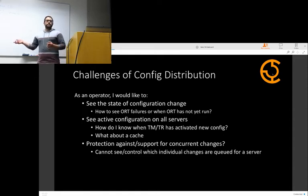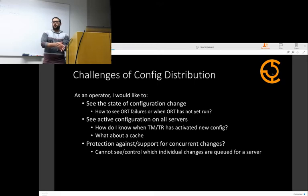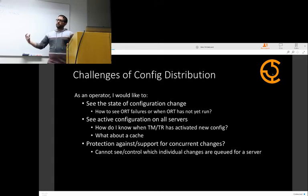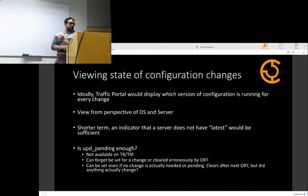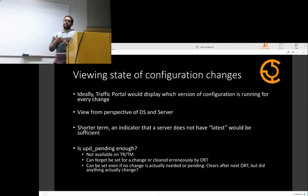Queue updates is a little weird right now — it'll queue all updates for all changes on the server. Right now you basically have to say to all other operators, 'don't touch anything, I'm going to make a delivery service change, wait for it to go all the way through the system before somebody else makes another change.' ORT just compares against the file on disk, not what's actually running in Traffic Server. We had an issue where we had the wrong private key for the public key, and somehow what Traffic Server was giving out was not what we expected — traffic_line -x didn't pick up the change. It's probably a Traffic Server bug, but it's still good to protect ourselves against that.